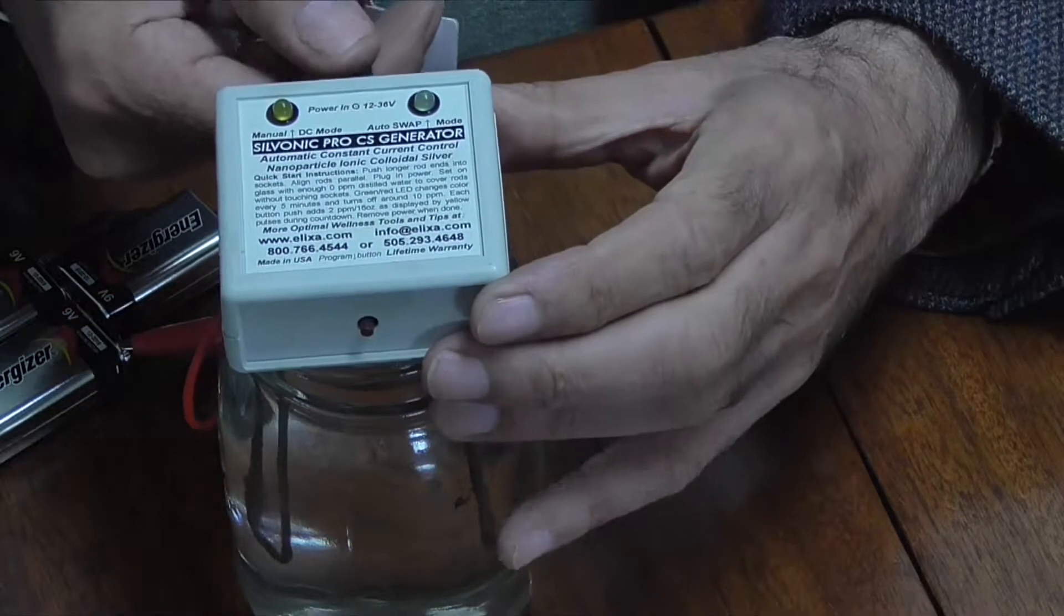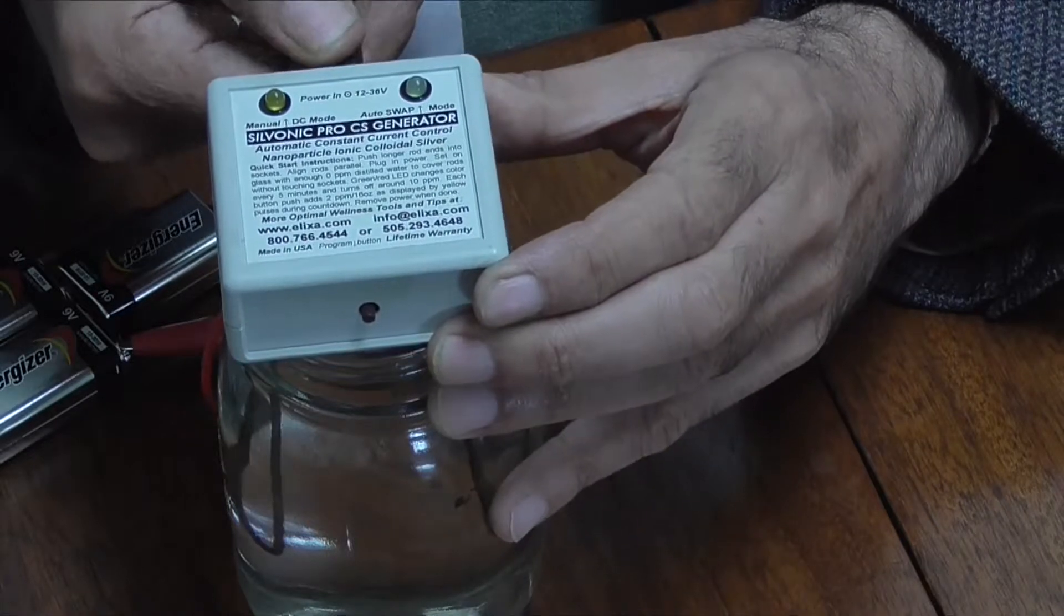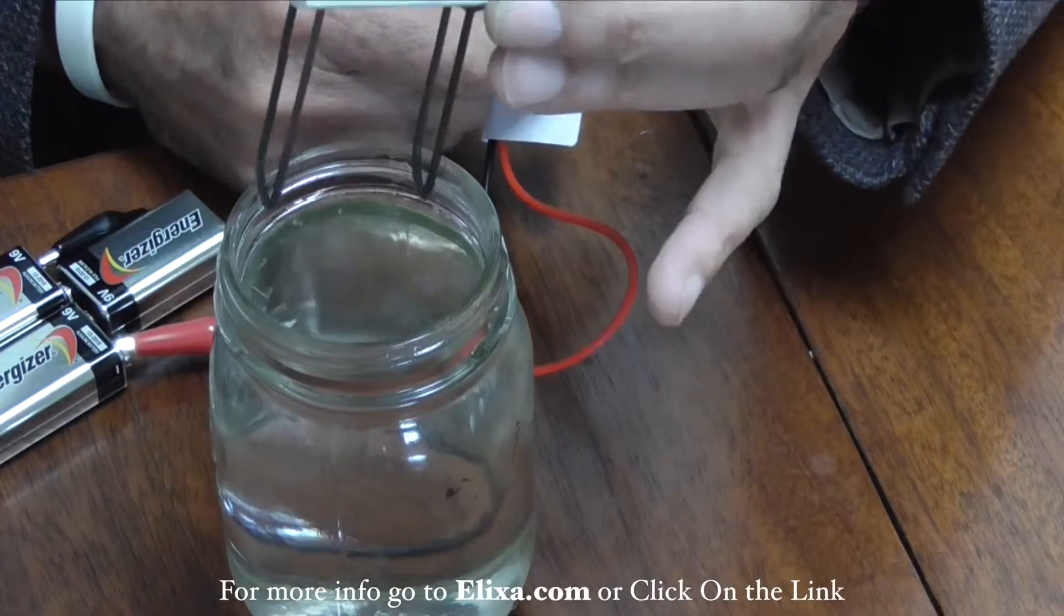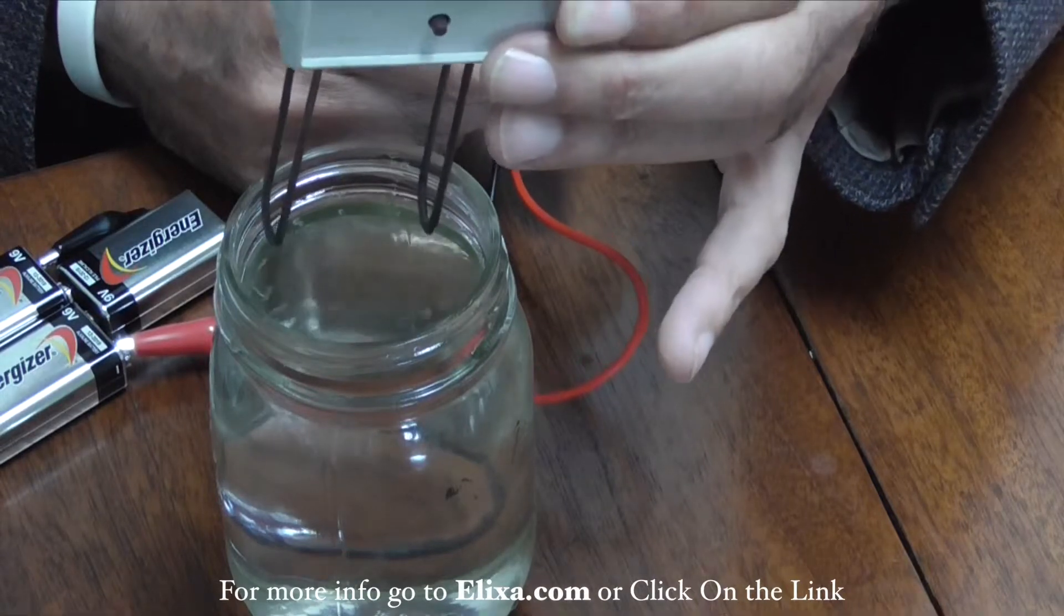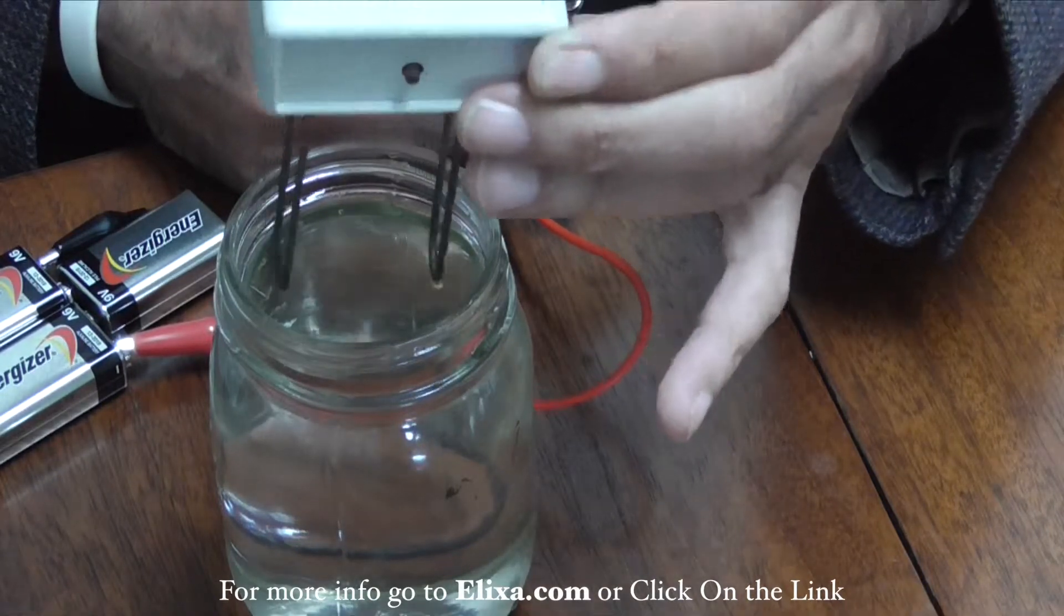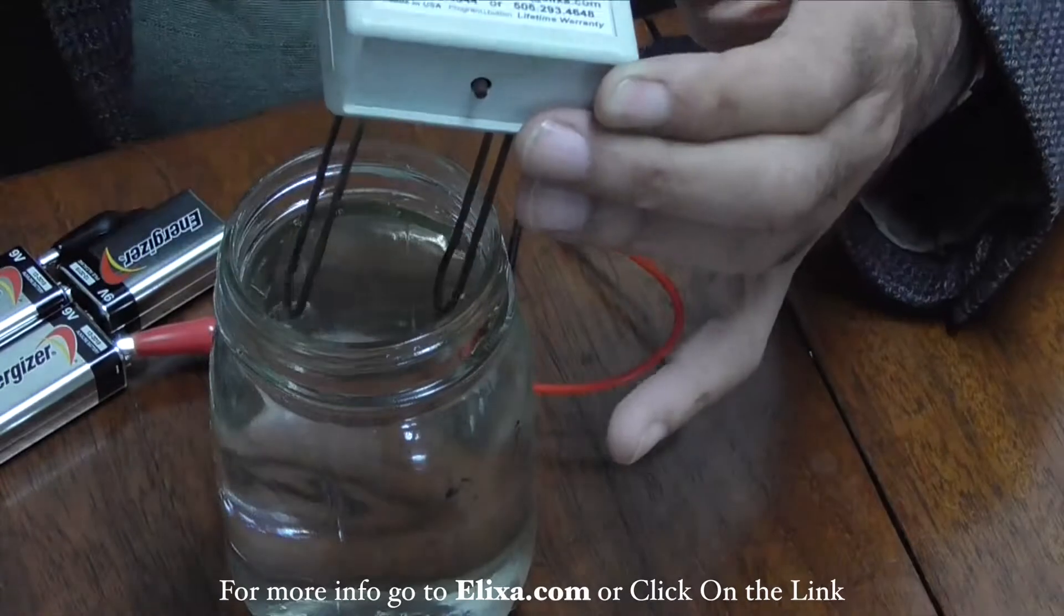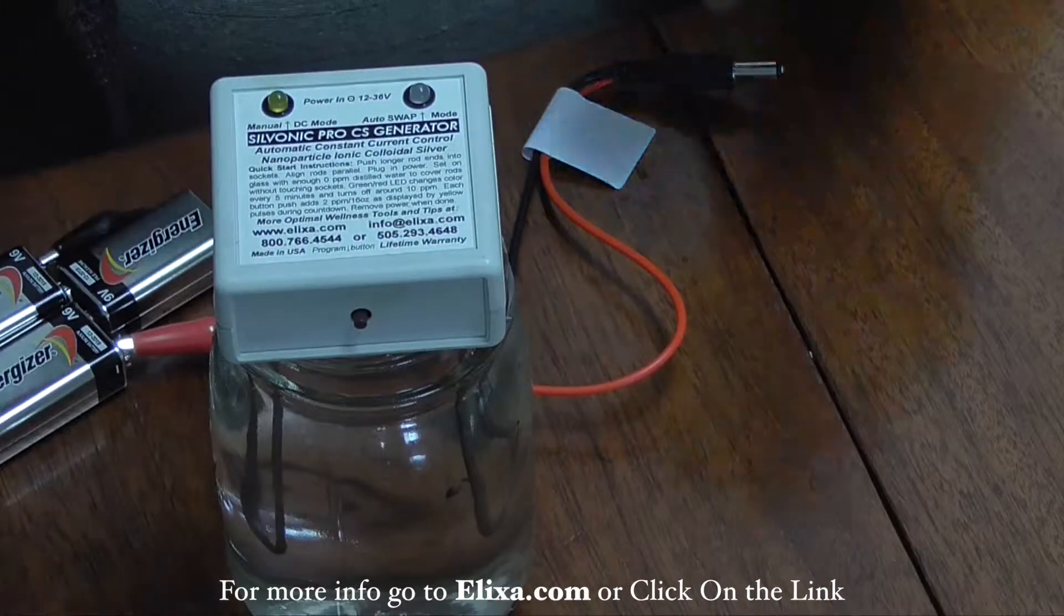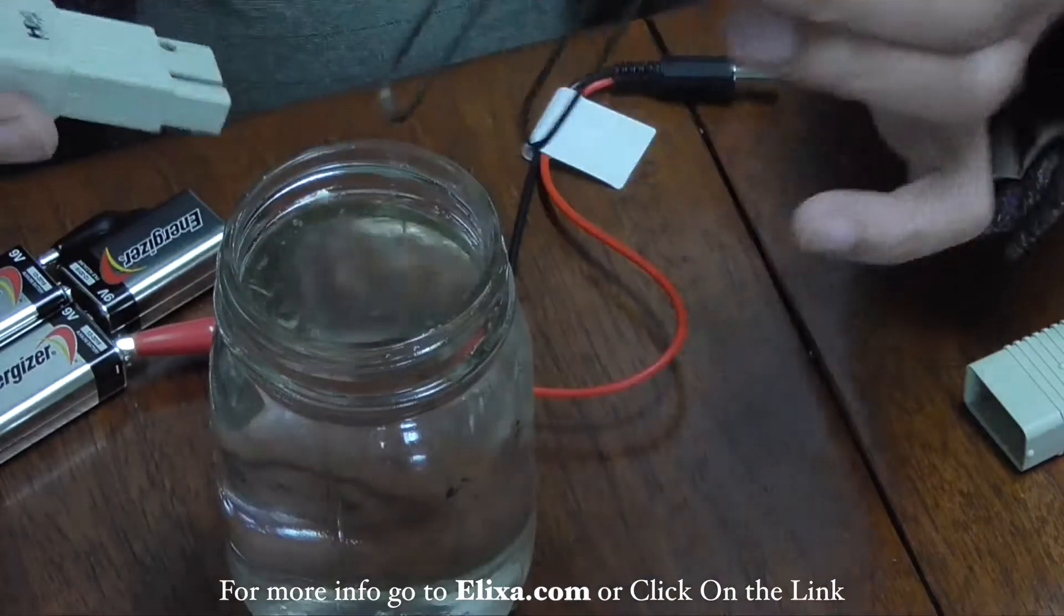Now, let's say that ordinarily what would happen is this. With this batch here, we've already made a batch, and it reads 17. This is reading 17 on the meter.